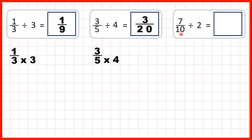Now we have 7 tenths divided by 2. So we write out the fraction and multiply the denominator by 2. That gives us 7 twentieths as our answer.